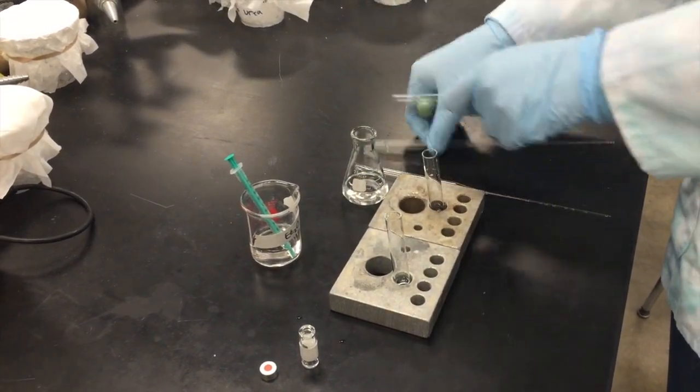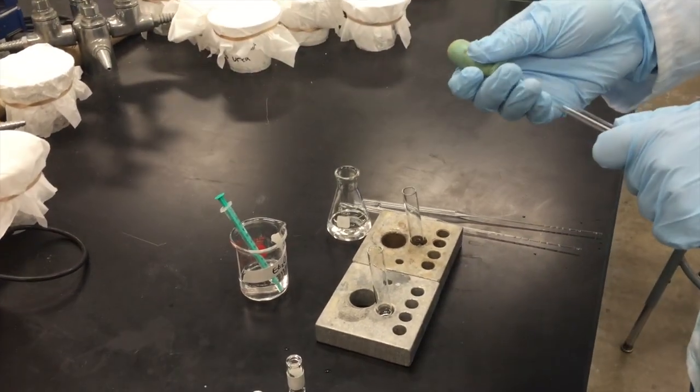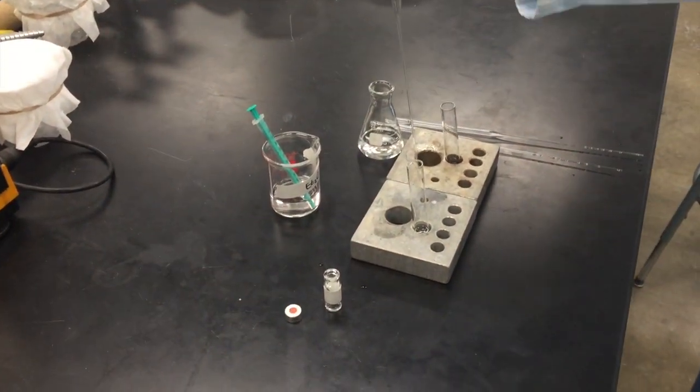Using a new pipette with an amber bulb attached, transfer all the solution from test tube two into a GC vial.